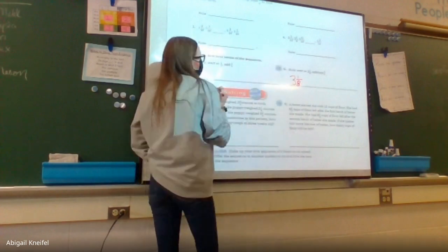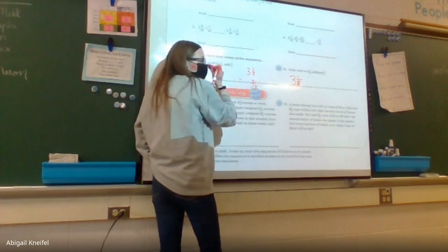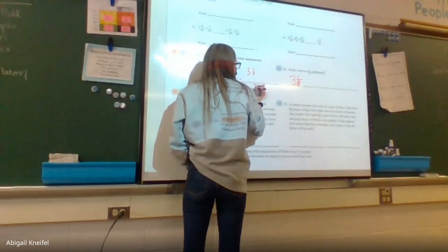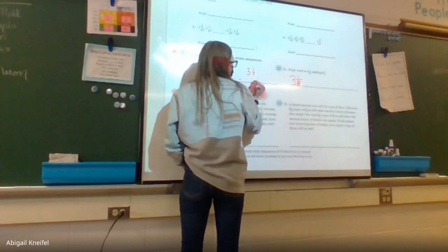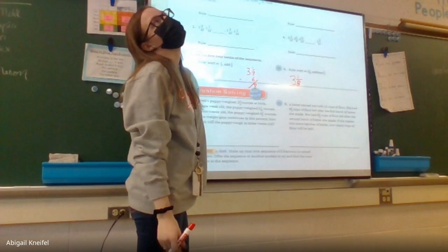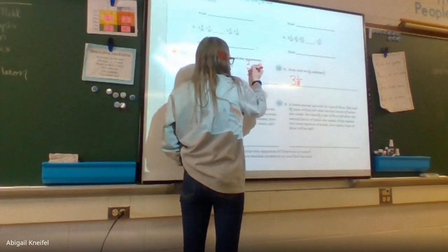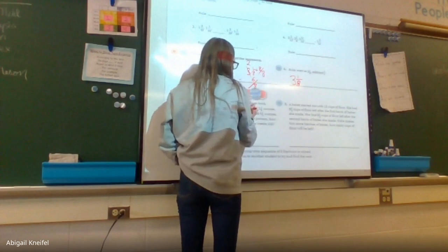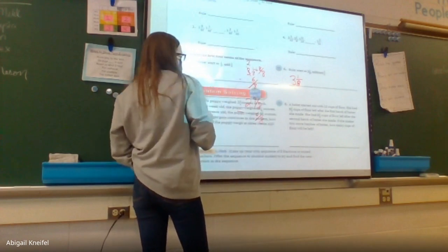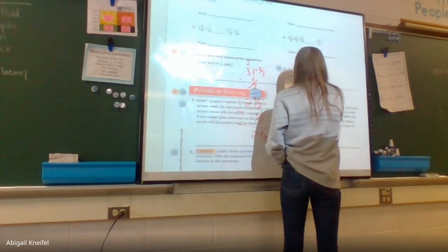I need to subtract three fourths from three and one eighth. Can I do that right now? No — I need the same common denominator. The least common denominator between eight and four is eight. My top fraction stays the same; I change three fourths to six eighths. Now I have three and one eighth minus six eighths. Can I do that? No — I have to borrow. Three becomes two, and I add eight eighths. New problem: two and nine eighths minus six eighths. Nine minus six is three. My next digit is two and three eighths.